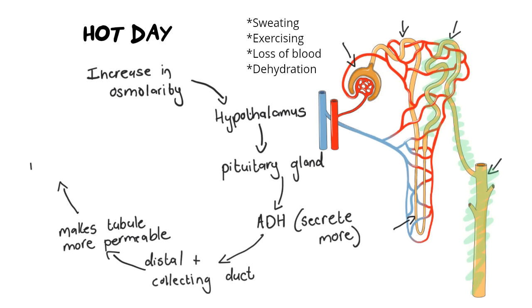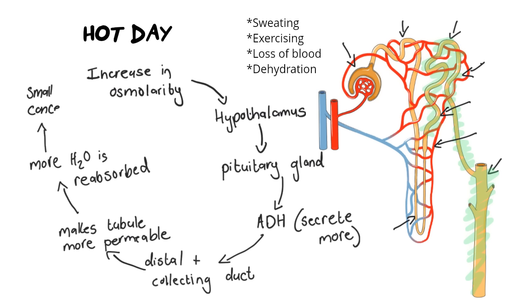The outcome of this is that more water is reabsorbed — put back into the bloodstream. You can see the capillary wrapping around particularly the distal convoluted tubule, which is great for reabsorption; the water goes straight back into the bloodstream. The final result is that a small, concentrated amount of urine is produced. It's important to always finish your answer off by saying that you return to the norm — the normal levels of water in the bloodstream. You must always round your answer off with that.